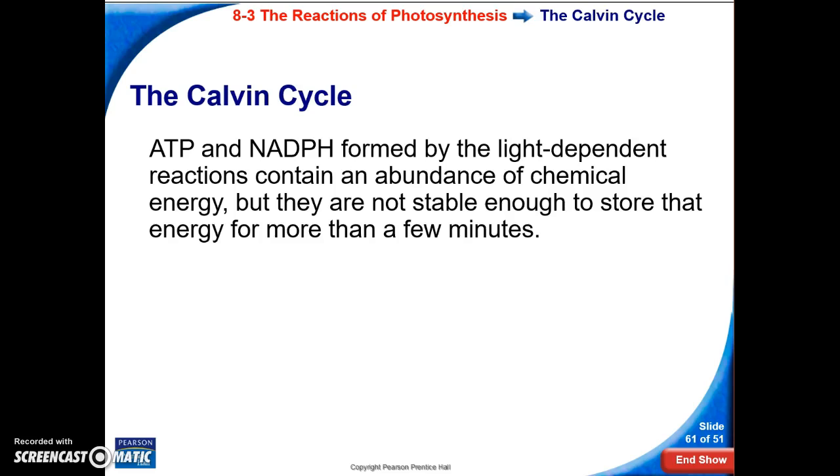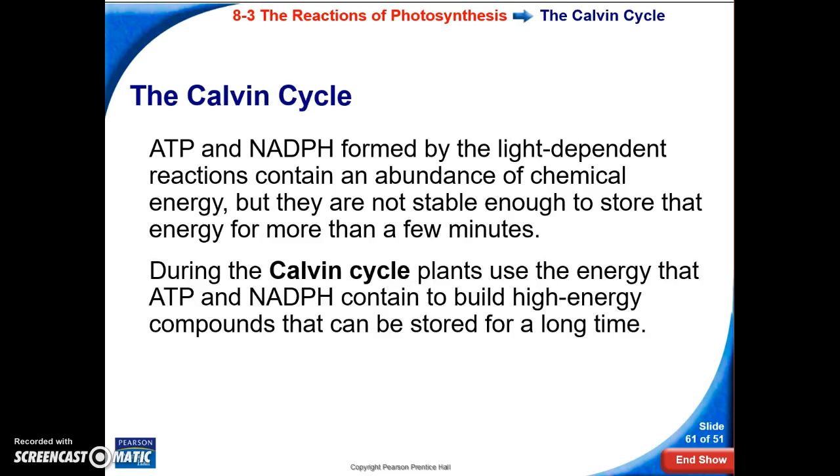ATP and NADPH, which were formed in that light-dependent reaction, contain a lot of chemical energy, but they're not stable molecules, so they can't store that energy for more than just even a few minutes. They're taken over to the Calvin cycle, and plants use the energy from ATP and NADPH to build high-energy carbohydrates that are able to be stored for a long time.